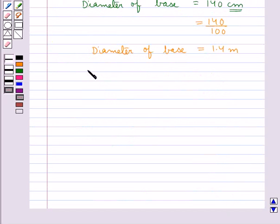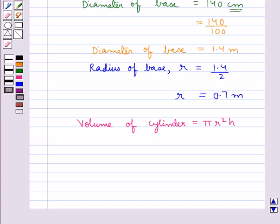That is radius of base r is equal to 1.4 upon 2 which is equal to 0.7 meters. So we have radius r is equal to 0.7 meters. We know the formula volume of cylinder is equal to pi r square h.